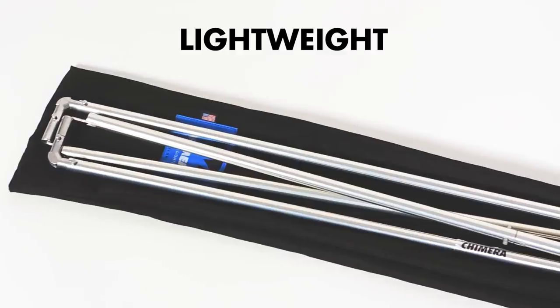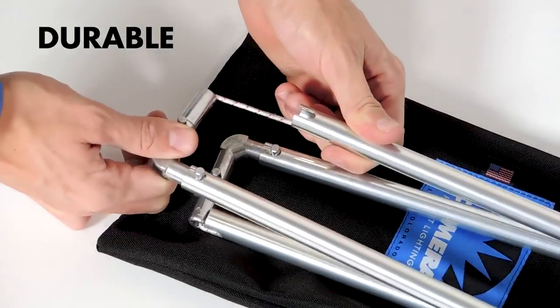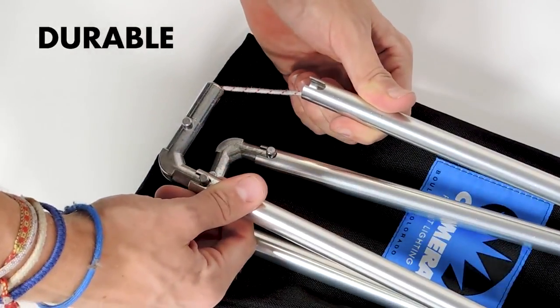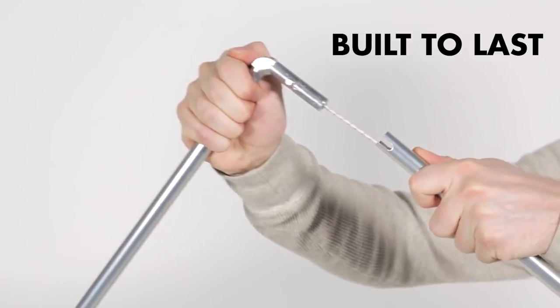Made from lightweight, durable 5/8 inch aluminum tubing with die-cast corners and internal bungee cord, the Shamira panel frames are built to be used time and time again, whether in the studio or on location.